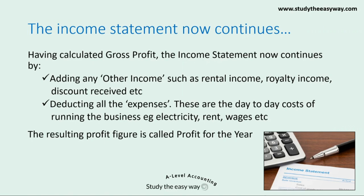Let's continue now with our income statement. Having calculated gross profit, the income statement continues by firstly adding any other income — such as rental income, royalty income, discount received and so on — and then secondly deducting all of the expenses. These are the day-to-day costs of running the business such as electricity, rent, wages and so on. The resulting profit figure is called profit for the year, which is the final figure in the income statement.